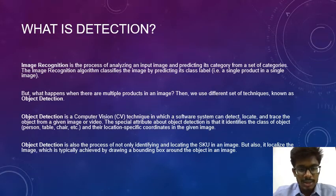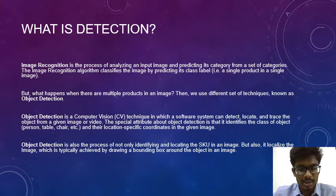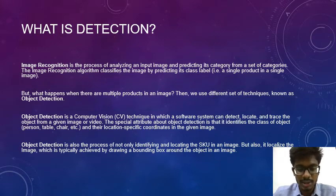So what is detection? Image recognition is the process of analyzing an input image and predicting its category from a set of categories. The image recognition algorithm classifies the image by predicting its class level, i.e. a single product in a single image. But what happens when there are multiple products in an image? At that time we will use a different set of techniques, i.e. object detection.